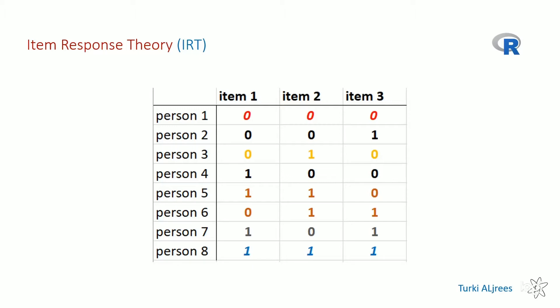You got the same grade even though you answered different items. Item Response Theory will discover the real difference between you and the other person — who has more ability — because she answered item number three, and item three is weighted more than item one, which is relatively easy. That's why we need Item Response Theory.